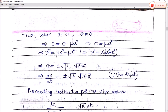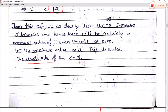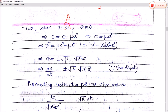Using the condition: when x equals a (amplitude), v equals zero. Substituting into v² equals C minus μx²: 0 equals C minus μa², so C equals μa². Now substituting this value of C back into the equation gives v² equals μa² minus μx², or v² equals μ(a² minus x²). Taking the square root: v equals plus or minus √μ · √(a² minus x²).